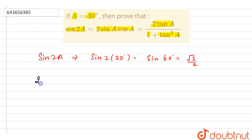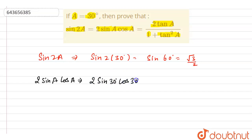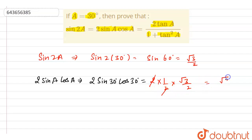Now let's find the value of 2sin(a)cos(a). It is 2 × sin(30°) × cos(30°). We know that sin(30°) = 1/2 and cos(30°) = √3/2. So it is 2 × (1/2) × (√3/2). The 2 cancels with 2, giving us √3/2.